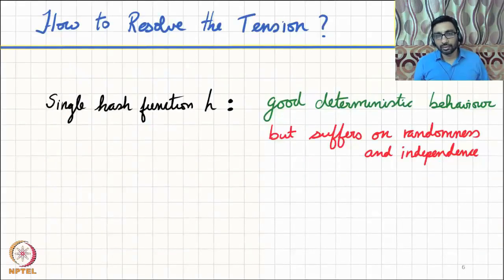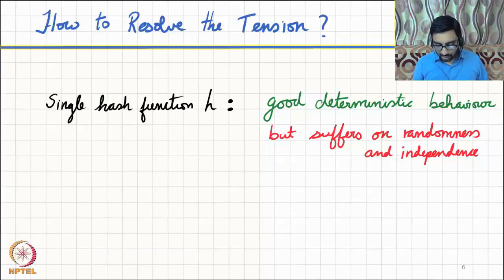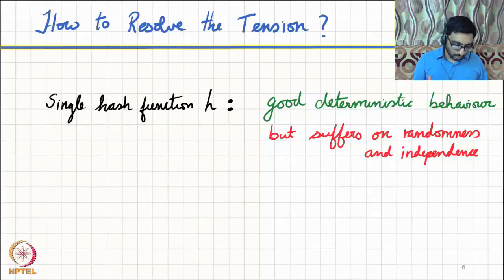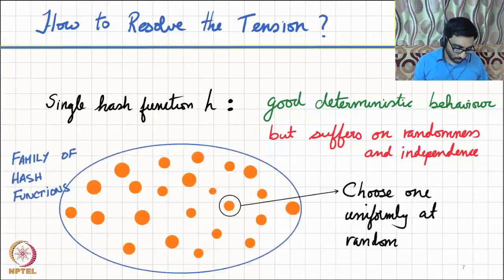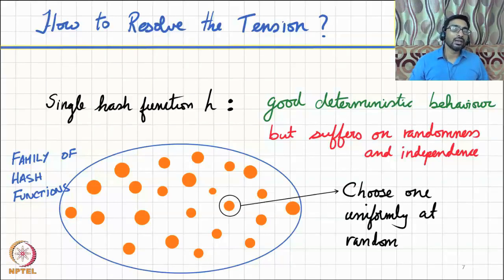Here's an idea for how to resolve this tension. Think about a single hash function — it has good deterministic properties, so anytime you hash an item it always goes to the same location. But a single hash function suffers on the randomness front. So instead of focusing on a single hash function, let's consider a family of hash functions. When we actually need a hash function, we choose one uniformly at random from this entire family, making it easier to satisfy the randomness requirements.